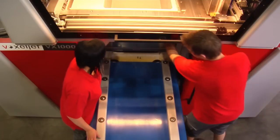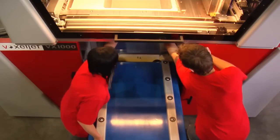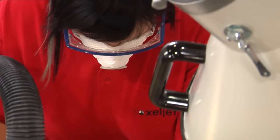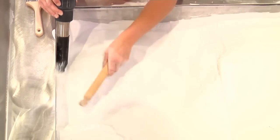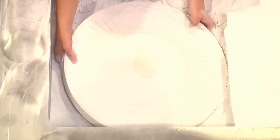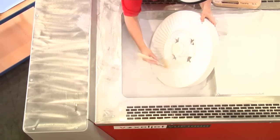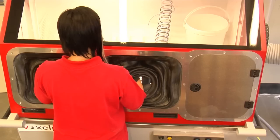After the printing process is complete, the models remain in the box for several hours for hardening. Then the plastic part can be unpacked. The unprinted powder, 100% of which can be reused, is removed with an industrial vacuum and compressed air.